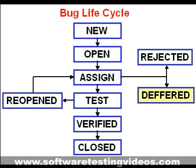The bug changed to deferred state means the bug is expected to be fixed in next releases. The reasons for changing the bug to this state have many factors. Some of them are: priority of the bug may be low, lack of time for the release, or the bug may not have a major effect on the software.